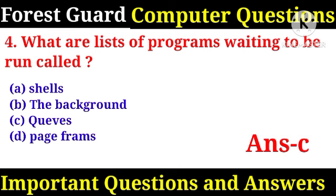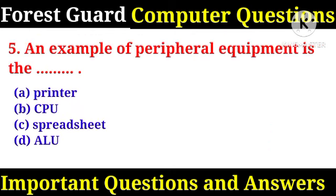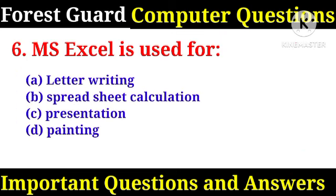What are lists of programs waiting to be run called? Right answer: C. An example of peripheral equipment is? Right answer: A, a printer.